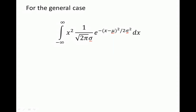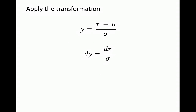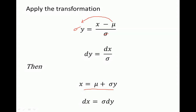To compute the general integral, we apply a variable transformation to make it simpler. Let's define y equal to x minus mu over sigma. Then dy over dx is the derivative of this function, which is just 1 over sigma, so dy equals dx over sigma. We also need x in terms of y: multiplying both sides by sigma and moving the mean gives x equal to mu plus sigma times y. And dx equals sigma times dy.